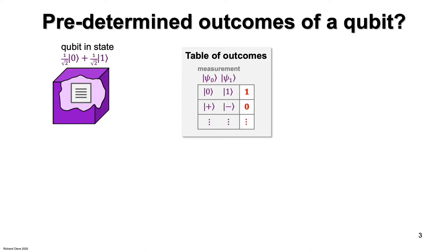For example, for a measurement in the computational basis, the outcome is a random bit. So a random bit is inserted into that entry of the table.